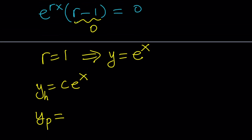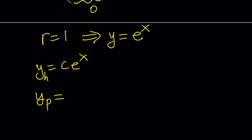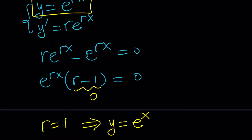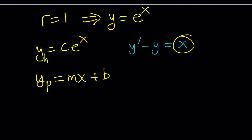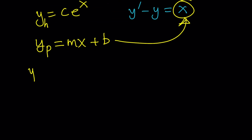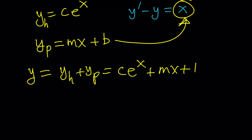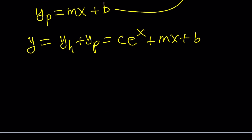Some people call this the complementary solution. Because of the x on the right-hand side of y prime minus y equals x, I'm going to assume that my particular solution is a linear function: mx plus p. The general solution y is going to equal y sub h plus y sub p, which is c·e^x plus mx plus p.